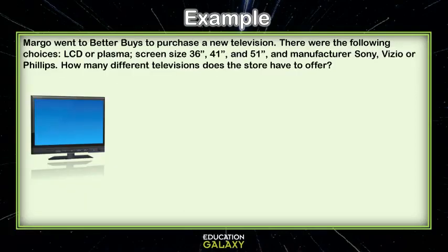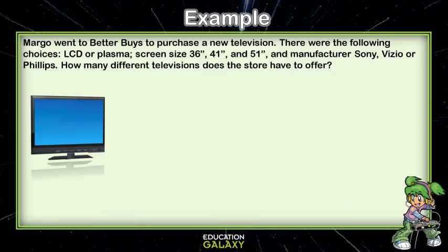Let's look at another example. Margo went to Better Buys to purchase a new television. There were the following choices: LCD or Plasma, screen sizes 36, 41, and 51 inches, and manufacturer — Sony, Vizio, or Philips. How many different televisions does the store have to offer?